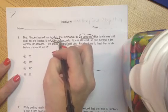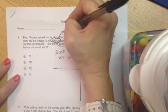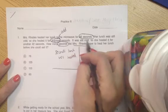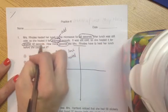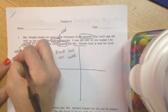This word more, we want to make sure that we circle it and talk about what that means. More, we know that we're going to add. It was still cold, so she heated it for another 42 seconds. There's another addition word. So we're going to put add over here.